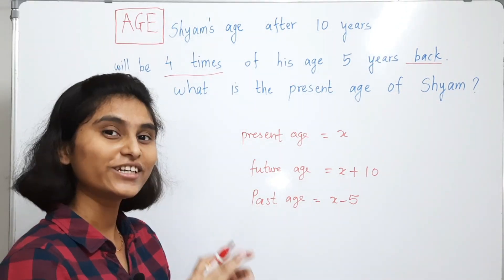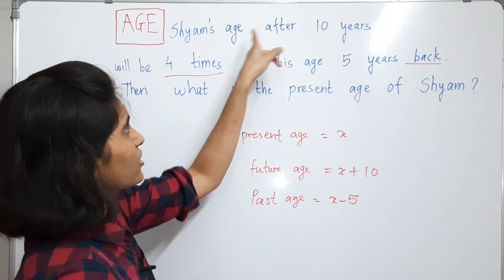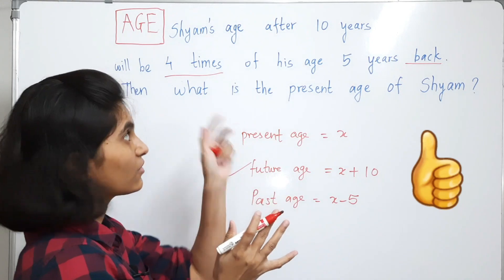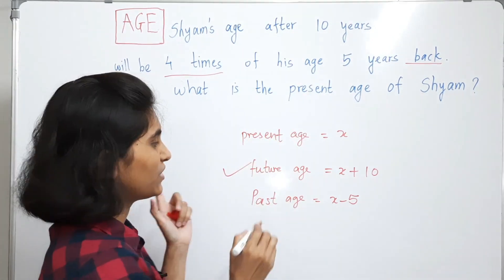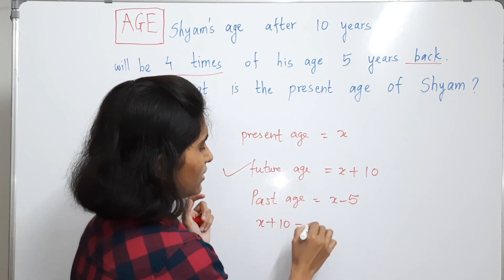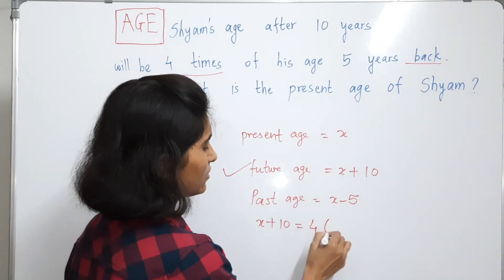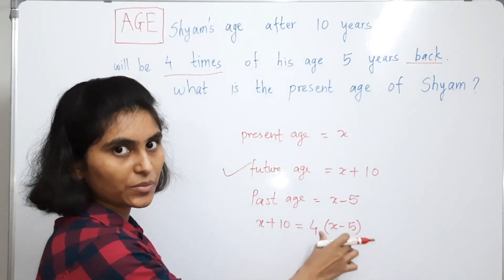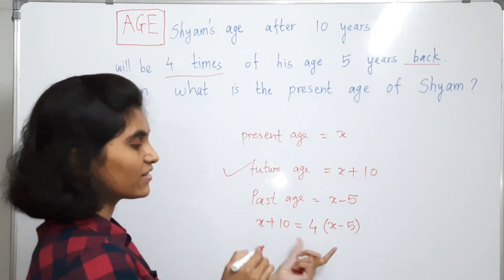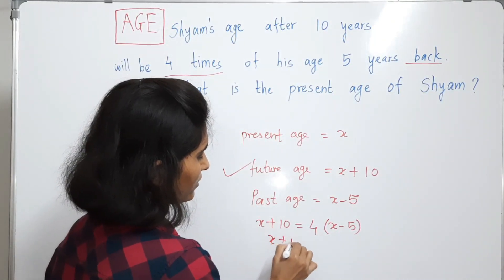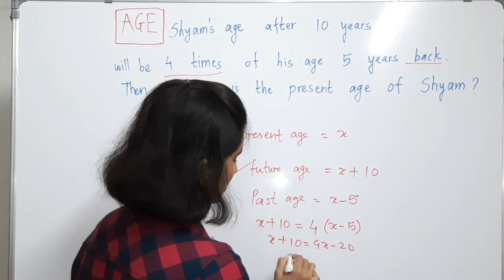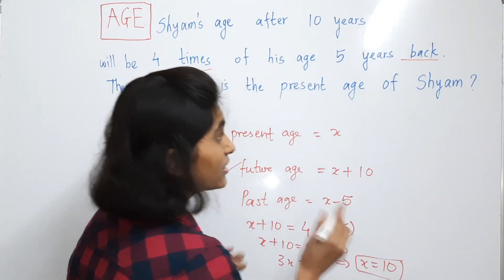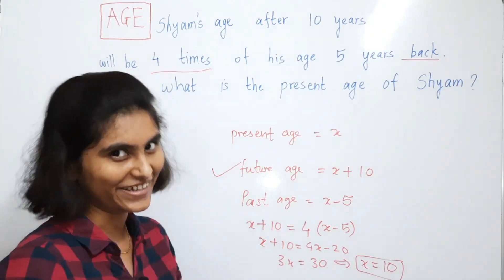Now let's find the equation in terms of x. The age after 10 years, that means x plus 10, is 4 times of his age 5 years back, so: x plus 10 equals 4 times (x minus 5). Solving this gives us 4x minus 20, so 3x equals 30, which means x equals 10. That means the present age of Shyam is 10 years.